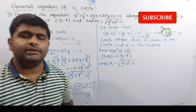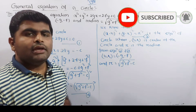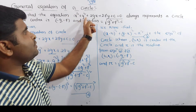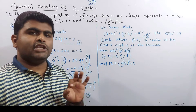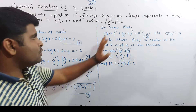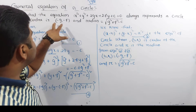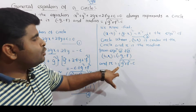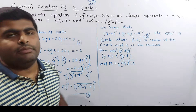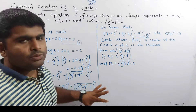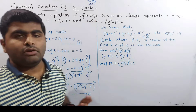So the general equation of a circle x squared plus y squared plus 2gx plus 2fy plus c equal to 0 has center minus g, minus f and radius equal to root of g squared plus f squared minus c.